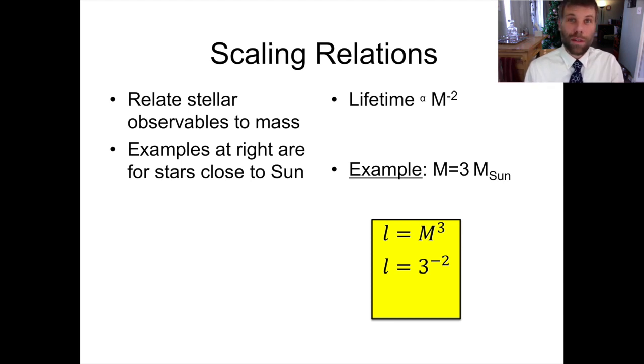So let's take our example star from the previous slide with three times the mass of the Sun and see how long it's going to live. Now again, this example is not strictly applicable. This mass is outside the range where this particular part of the scaling relation works, but still just an example. So we're going to plug in that three again. We're going to have three to the negative two power. So what's three to the negative two? It's one ninth.